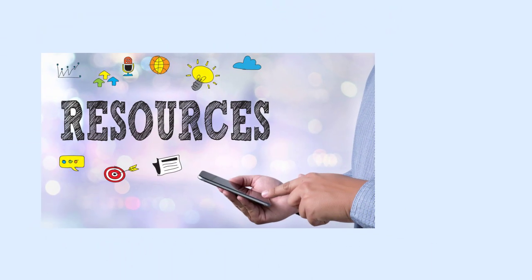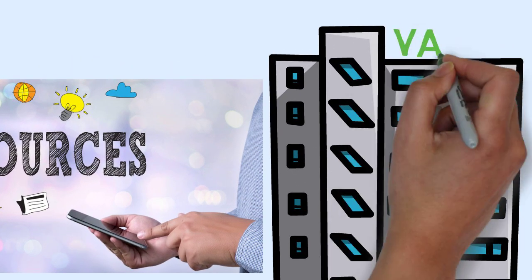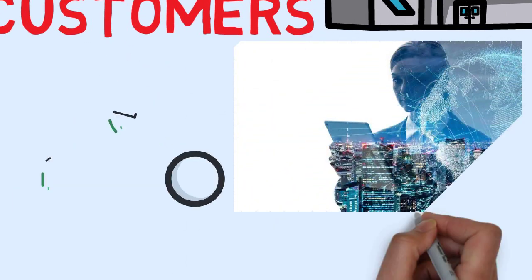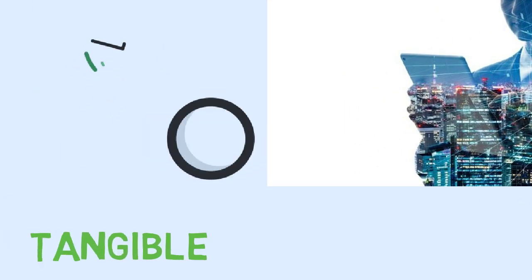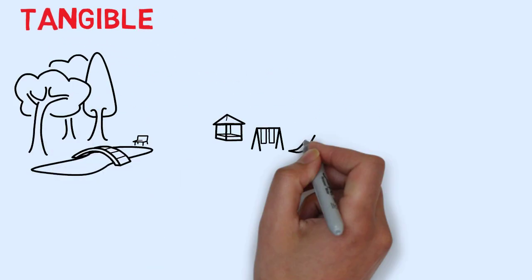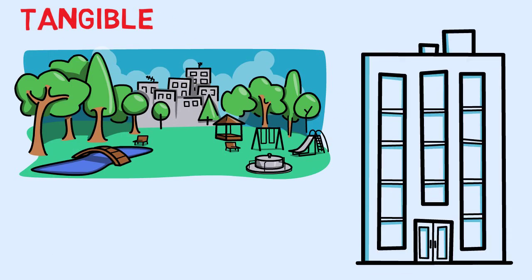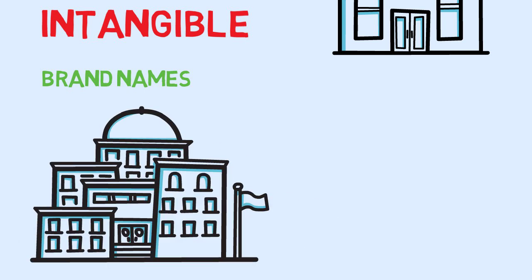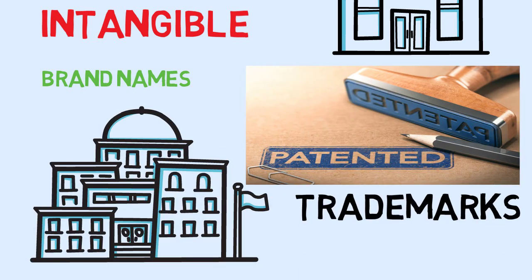Resources are factors that enable a company to create value for its customers. They can be financial, physical, social, technological or organizational factors. Resources can be tangible or intangible. Tangible resources are things such as land, buildings, inventory and cash. Intangible resources are non-physical resources like brand names, company reputation, intellectual property such as patents and trademarks, and employees' knowledge.